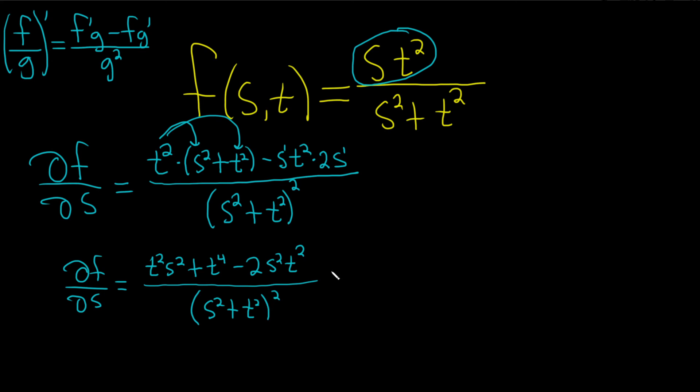It looks like we do get some simplification. There's really a 1 here in front of this t squared s squared and there's a negative 2 here, so when you subtract them you just get negative 1 s squared t squared plus t to the fourth.